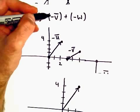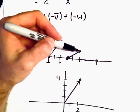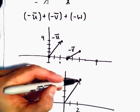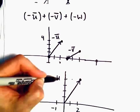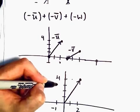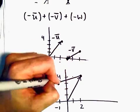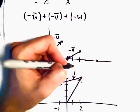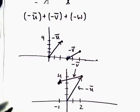All right, then if we add on to that the vector negative v. Well negative v actually says go three units to the left and one unit down. So I'll go one unit, two units, three units to the left and one unit down. So this would now be the vector negative v. Again the original one was negative u.